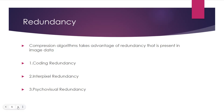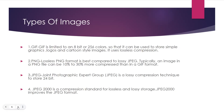The second is pixel redundancy, arising from correlated pixels in an image. The third is psycho-visual redundancy — data ignored by the normal visual system. The goal of image compression is to minimize the number of bits representing the image, addressing these redundancies through a systematic approach.